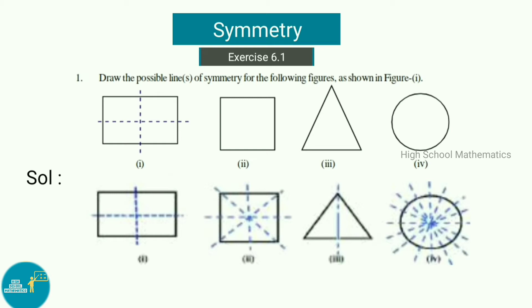The third figure is an isosceles triangle, so the number of lines of symmetry is one. The fourth figure is a circle. For a circle, the number of lines of symmetry is infinite, so we can draw many lines of symmetry for this figure.